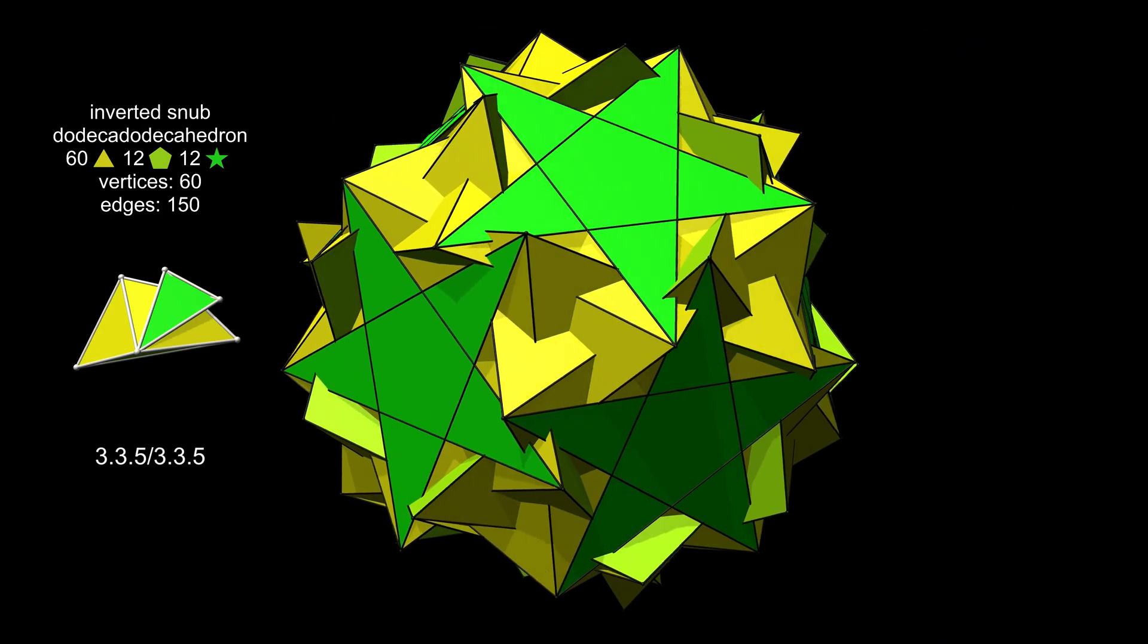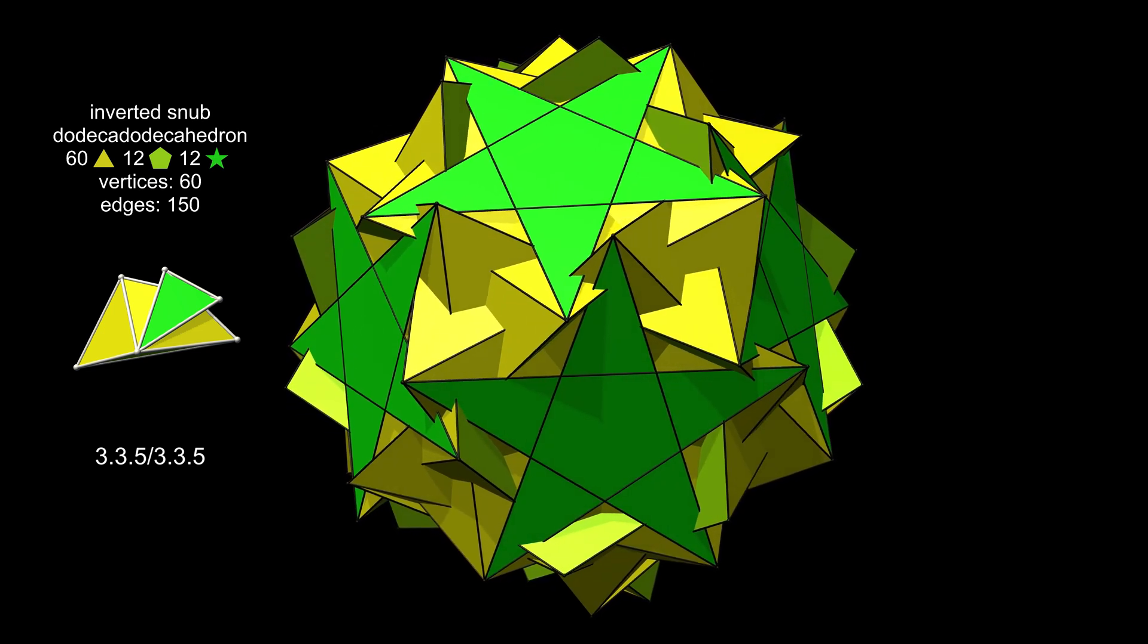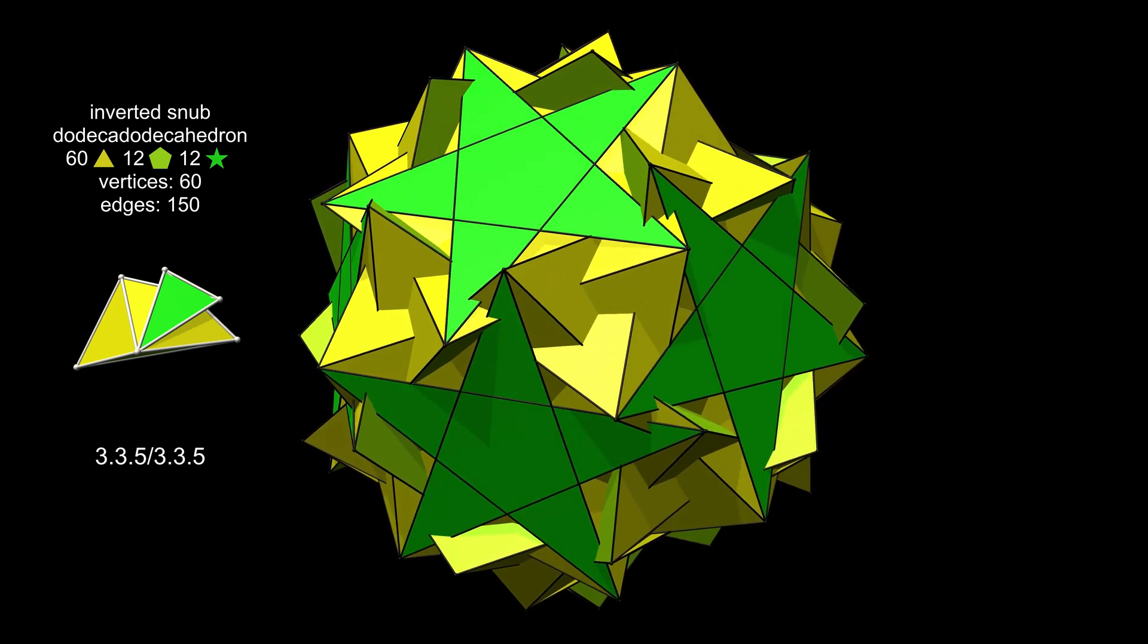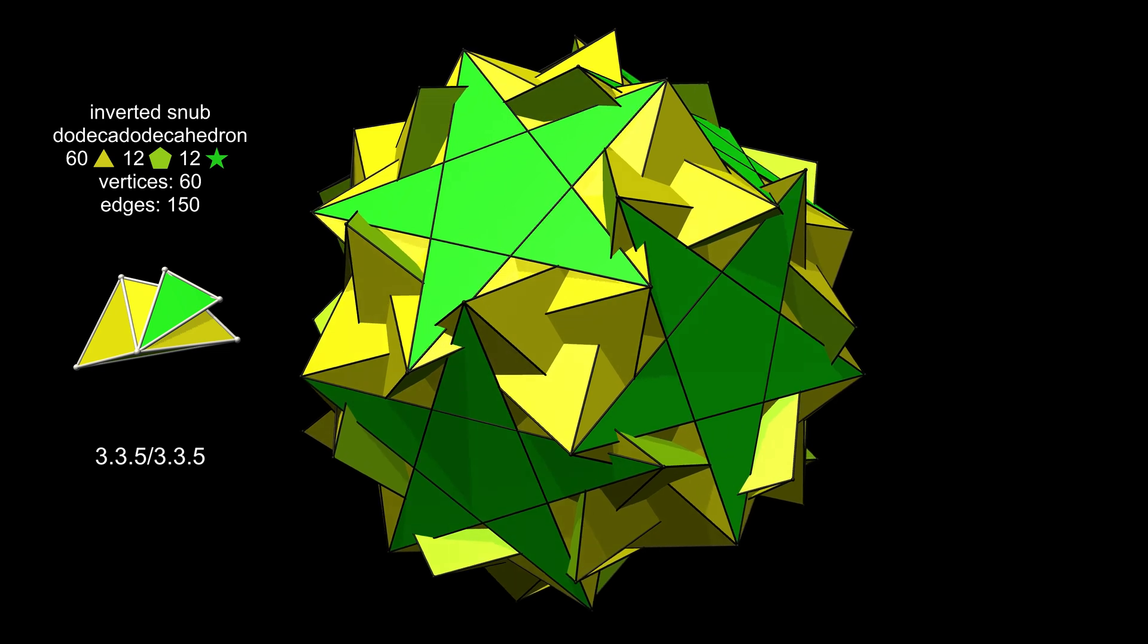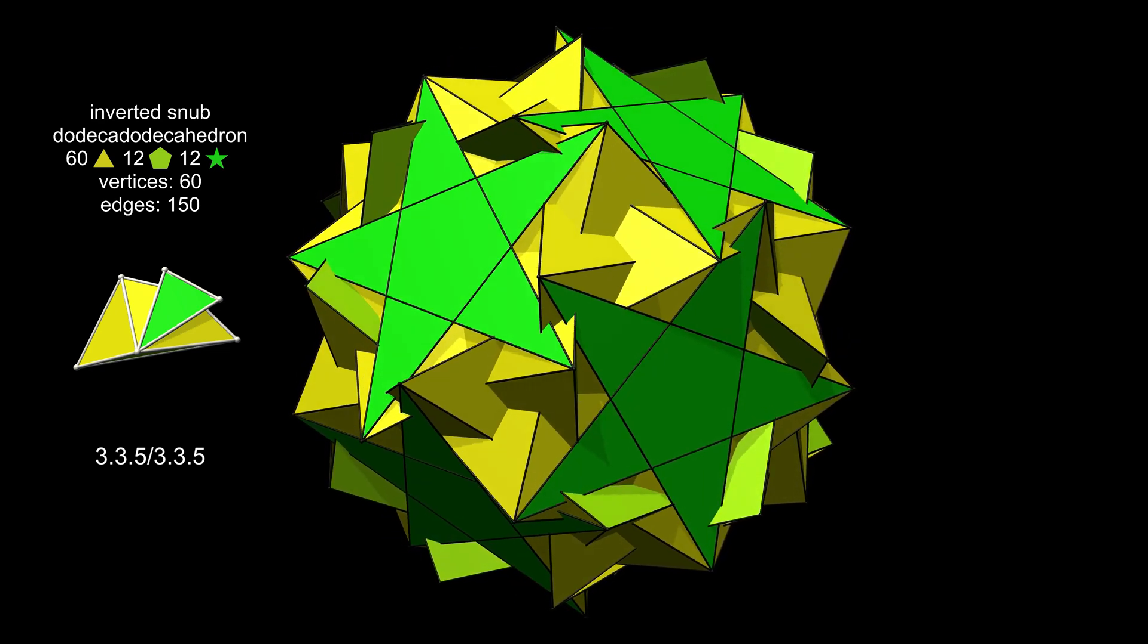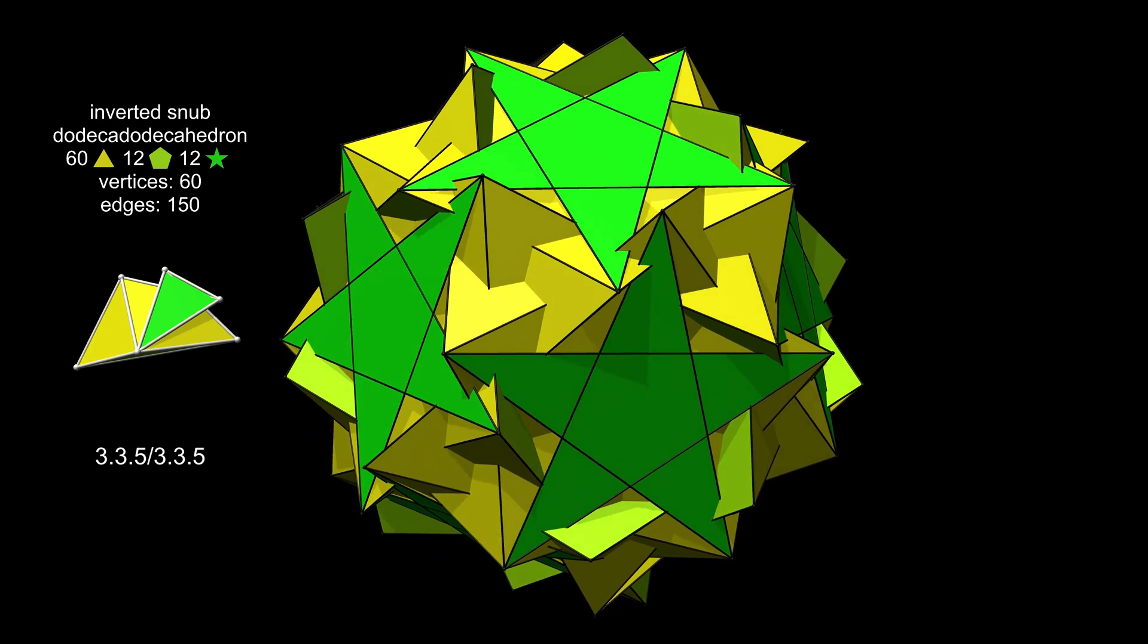The inverted snub dodecadodecahedron is one of my favourites. The large pentagrams on the surface are very slightly cut by the faces, making it look as if some miscalculations occurred in drawing it. You can see from the vertex figure that the pentagrams actually face inwards. This is what the inverted in its name means.